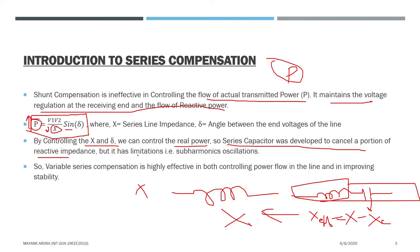But it has a limitation — it will inject subharmonic oscillations, so we have to eliminate this. Variable series compensation is highly effective in both controlling the power flow in the line and improving stability. If we use series compensation, we can get maximum power flowing through our transmission line and also improve stability.